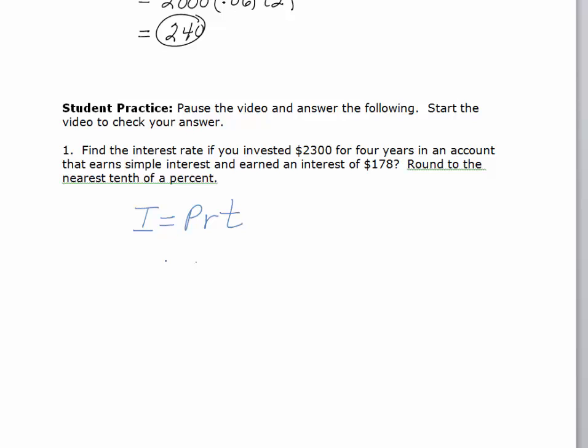We know the interest that we earned, the amount was $178. We don't know R, and we do know T, which is, since it's four years, we're going to multiply by four. So what I would do first is I would multiply the four times the $2,300, and you get $9,200 R equals $178. We'll divide both sides by $9,200.